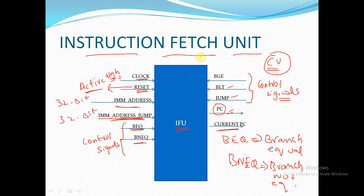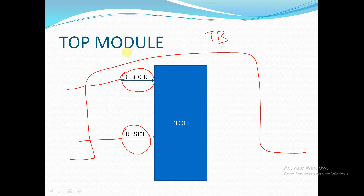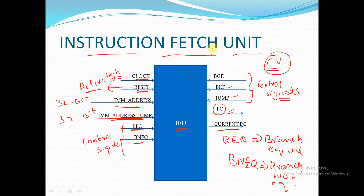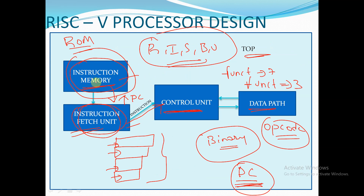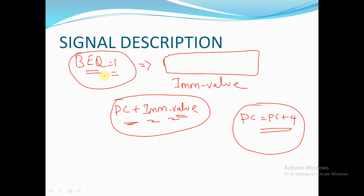In the previous session we started with the discussion of the Instruction Fetch Unit and the top module. From the Instruction Fetch Unit we get the PC signal, and this PC signal is given to our Instruction Memory Unit. Let's see the internal architecture of this Instruction Memory Unit.